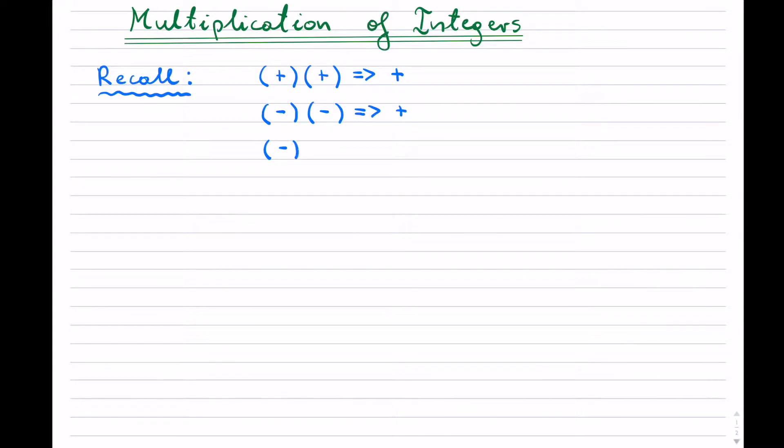And when one number is negative and the other one is positive, or vice versa, then in this case, the answer is negative. And this is both if you're going to multiply two numbers or if you're going to divide two numbers.